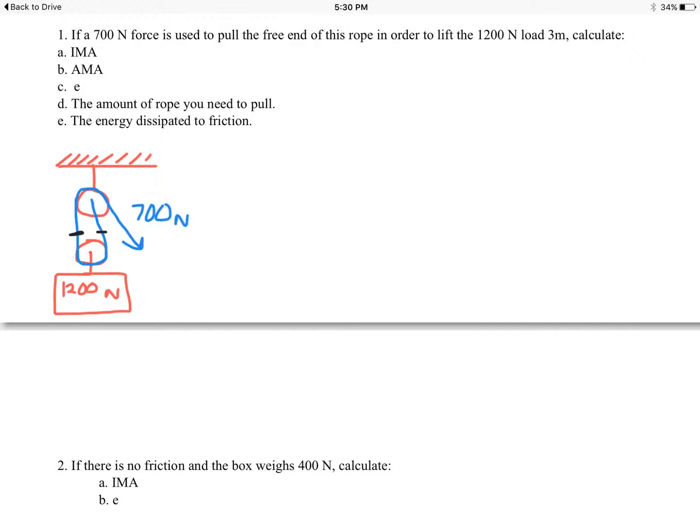So in part A, we're looking for the IMA, the ideal mechanical advantage. Now with ropes and pulley systems, we do this the fast way. We don't need to do a calculation. We just look at the setup and count the ropes. The ideal mechanical advantage here is two. All you do is count the ropes or the pieces of rope that are holding up the bottom pulley where the two black marks are.